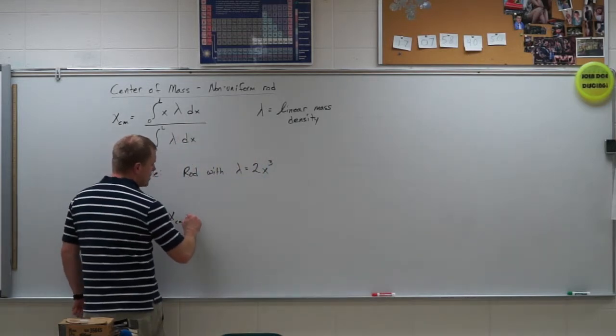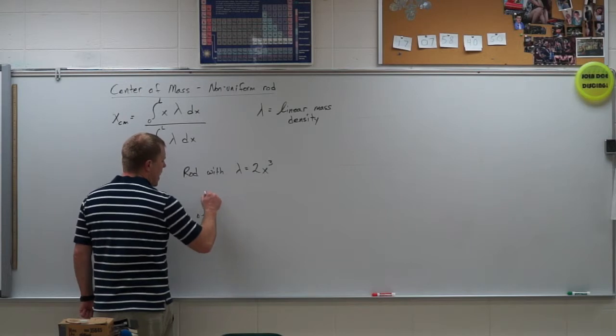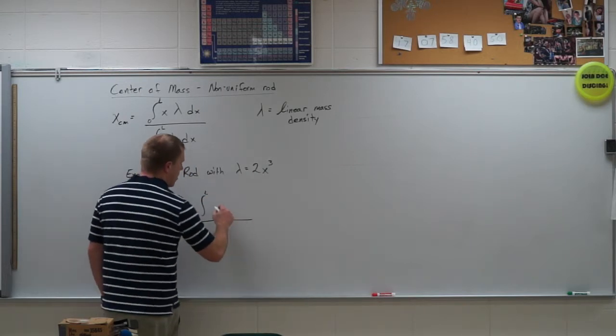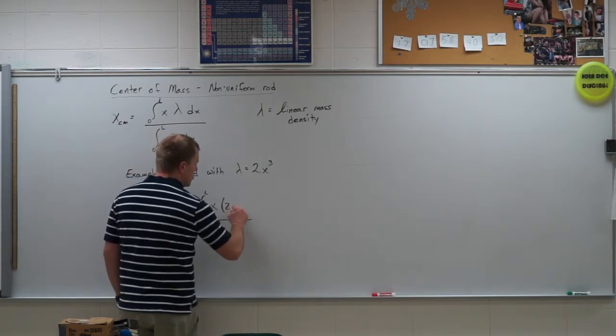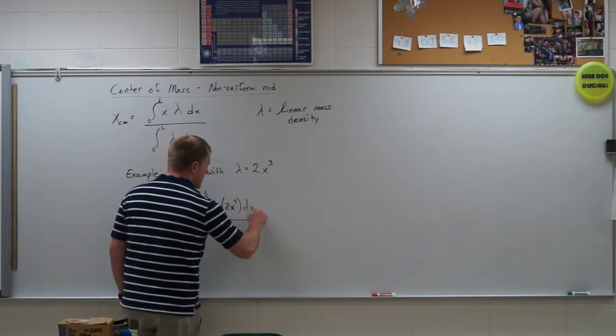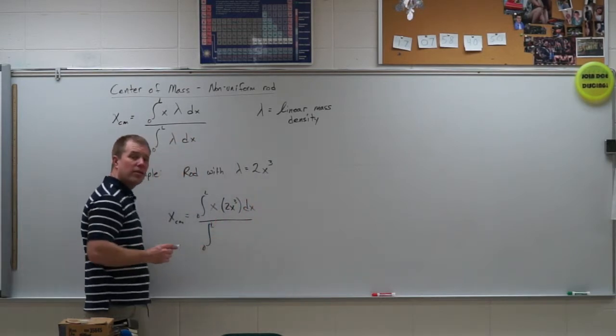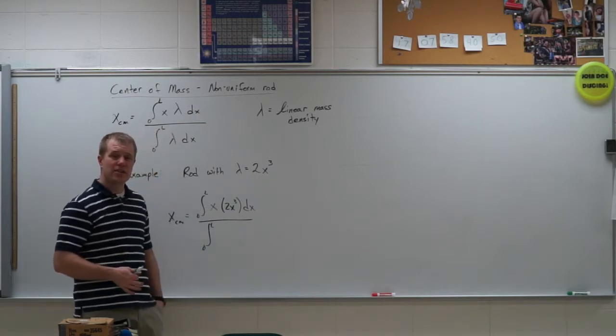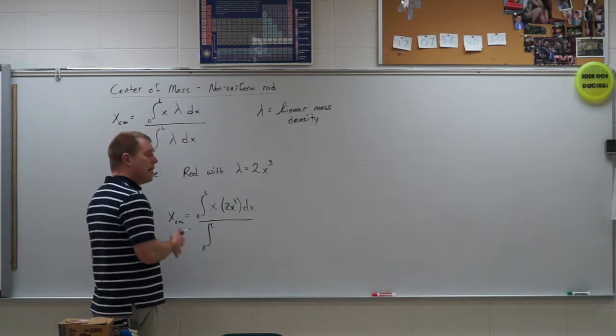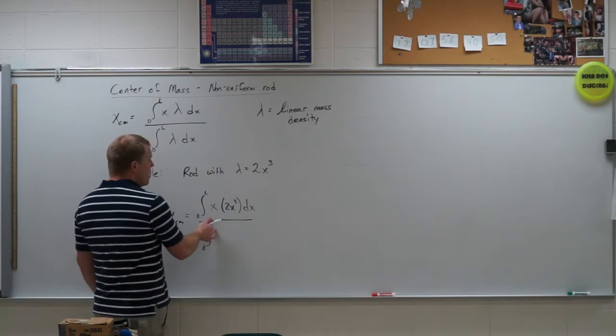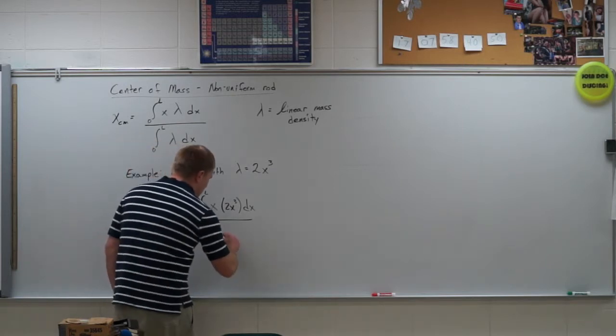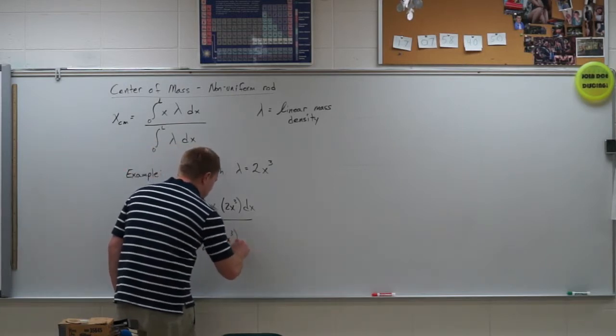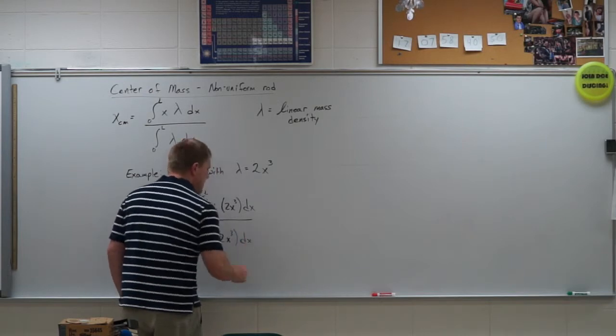So, x_cm is going to be the integral from 0 to L of x times 2x³ dx, divided by the integral from 0 to L, where L is the length of the rod. So, they give you an L value here. This makes this a little easier. You can just type it into a calculator. But typically, they won't. So, we'll have an L, and then on the bottom, I'm just going to have my 2x³ dx.